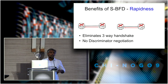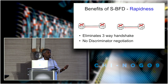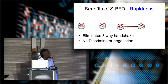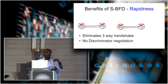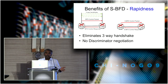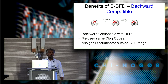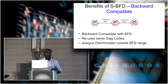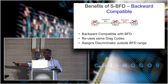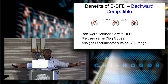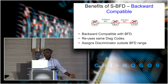Rapidness: because we pre-assign the discriminator and advertise it through IGP protocols, we eliminate the need for any negotiation. With traditional BFD, for every session we negotiate before sending control packets. With seamless BFD, all information is readily available — just fetch details from the database, put them in the control packet, and send immediately. Backward compatible: there's no need to upgrade the entire network. A node can run seamless BFD to a neighbor that supports it, while falling back to traditional BFD for nodes that don't. It uses discriminators outside the BFD range, so a node can run both BFD and seamless BFD simultaneously.